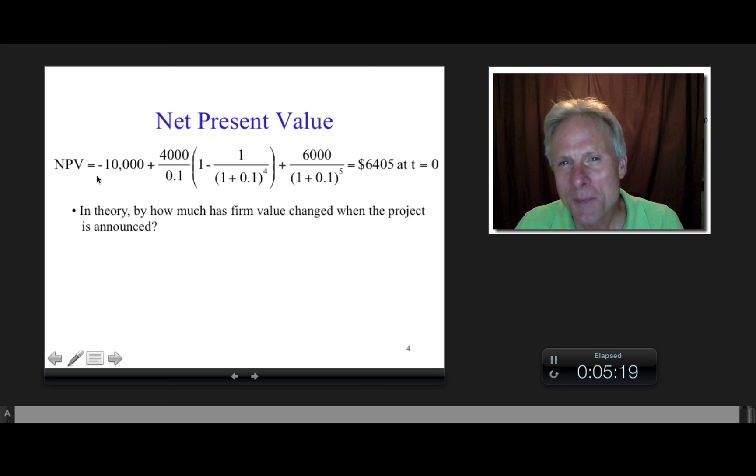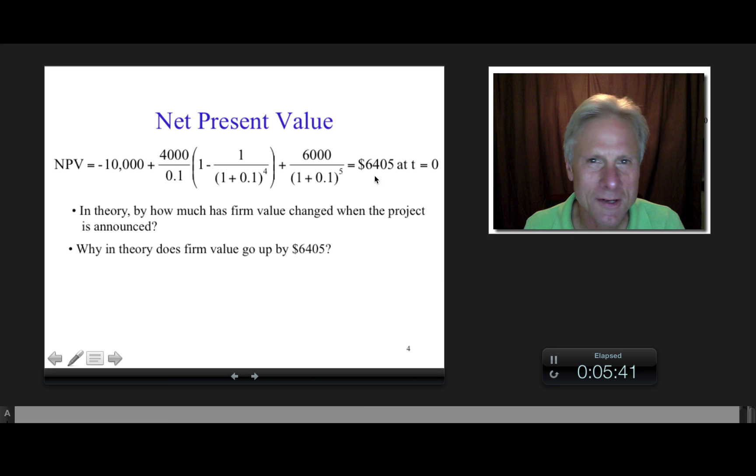So let me ask you this. Here we have $6,405 as our net present value. So my question to you is, in theory, how much has firm value changed when the project is announced? Well the answer is $6,405. And we'll get into when, but we're also going to get into an assumption that's part of this. And that is this notion of efficient markets. I really have to say, if I assume that the change in firm value is an efficient reaction or a reaction consistent with efficient markets, then firm value will have changed by $6,405.